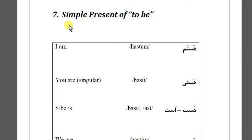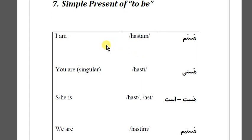Today I'm going to review the next lesson — lesson number seven: simple present of 'to be.' To be is one of the most common verbs in Persian. So the first form is hastam. Hastam means 'I am.'